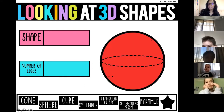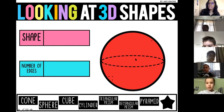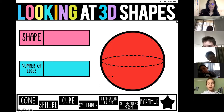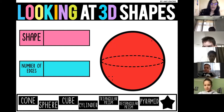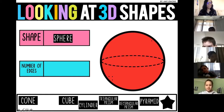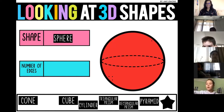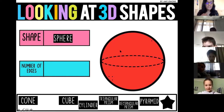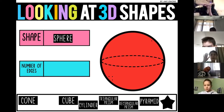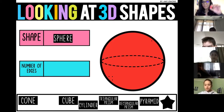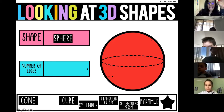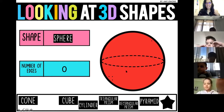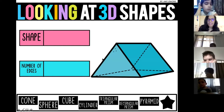Easy peasy — what's the name of this shape? It's called a sphere. How many edges does the sphere have? Maya guesses one, two, three. Remember: edges are points where lines come together. Does this one have lines? No. It has one face but actually zero edges.